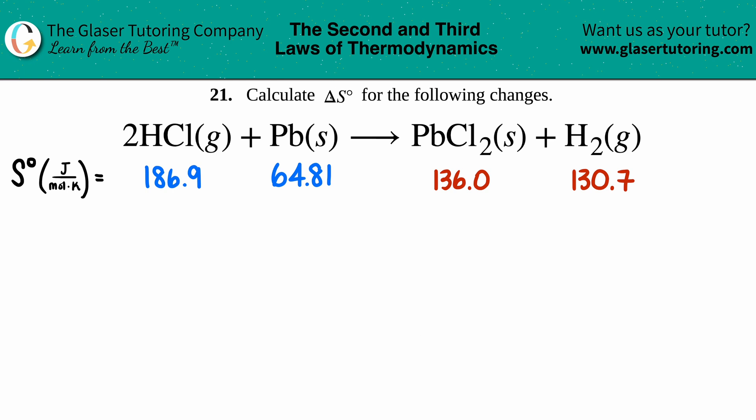Number 21: Calculate the delta S° for the following changes. We have a balanced equation: 2HCl(g) + Pb(s) yields PbCl₂(s) + H₂(g). We want to find out what that delta S° is.